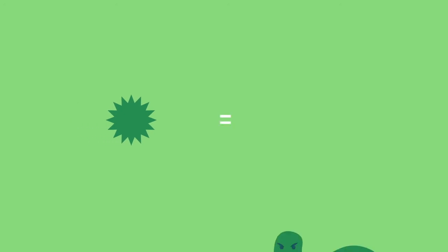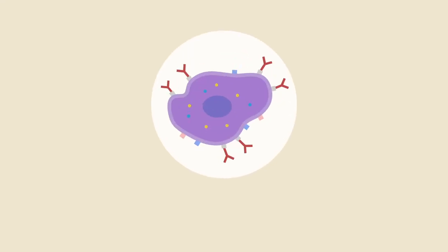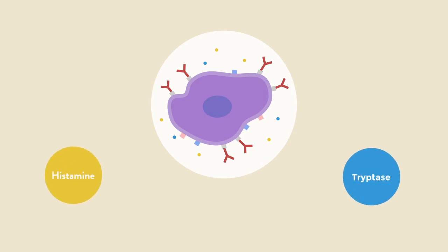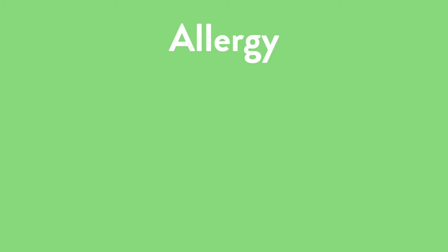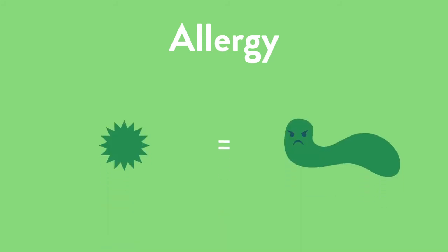Your body sees a grass pollen and thinks it's a foreign invader like a worm. The mast cell is kind of like Homeland Security or Border Patrol — it monitors whether or not something is harmful to you. If it thinks it's harmful, it is going to react. In doing so, it releases chemicals. Some of the chemicals released include things like histamine, tryptase, and other things that cause our bodies to itch, cause our blood vessels to dilate and expand, and alert your body that there's something going on. This is why allergies are so annoying — because your body thinks it's fighting some kind of parasite.